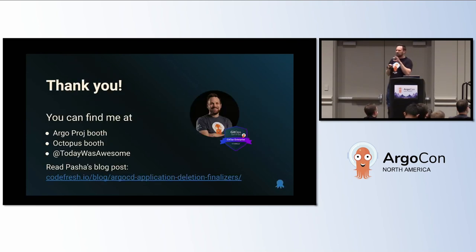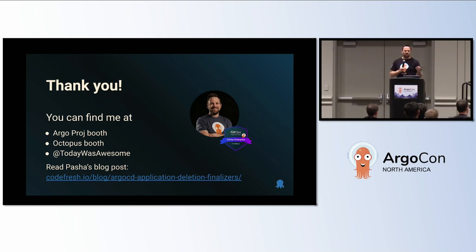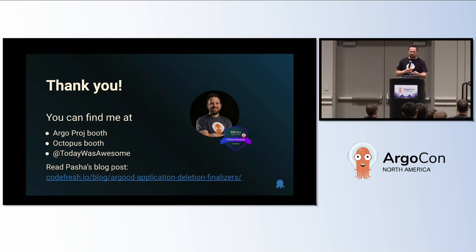That's it — we covered a whole lot of scenarios. Hopefully I gave you some solutions and things to think about so you can keep your resources safe. You can find me this week at either the Argo booth or the Octopus booth, or on Twitter at TodayWasAwesome. I'm also running a contest — find my Argo forerunner car with the Argo and Kubernetes logo, take a picture, and tag me to win a mug. You can also read Pasha's blog post on Codefresh.io. Thank you very much.